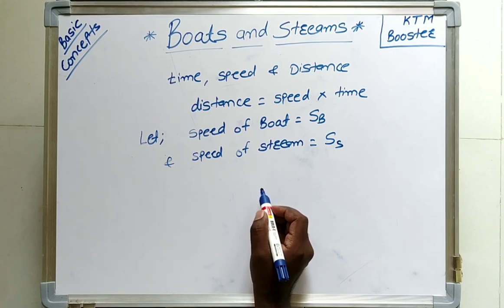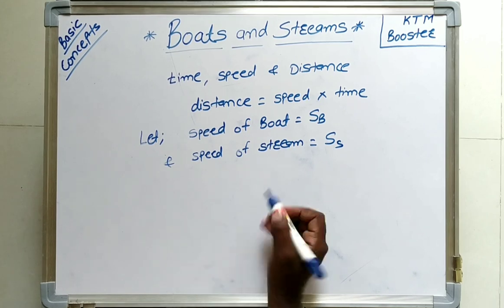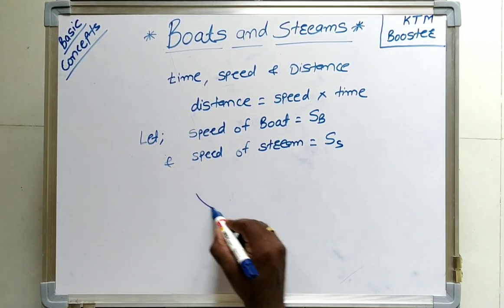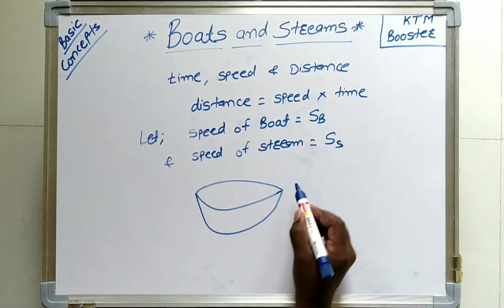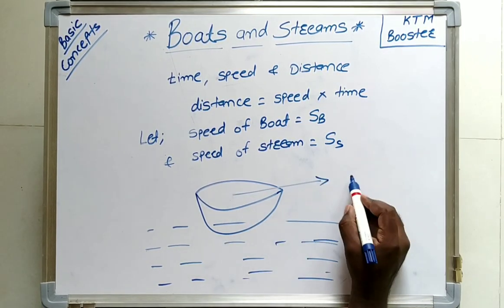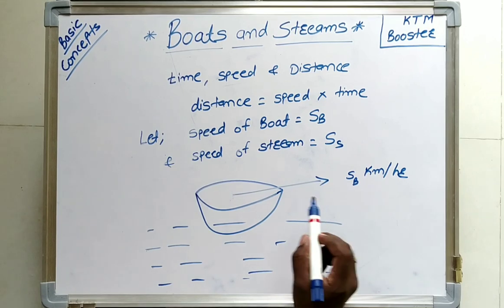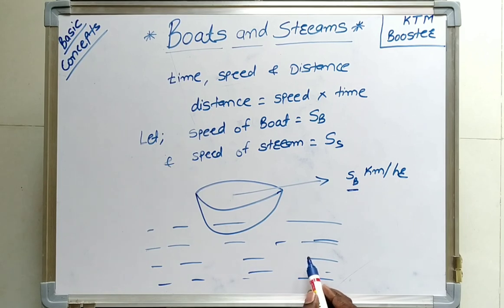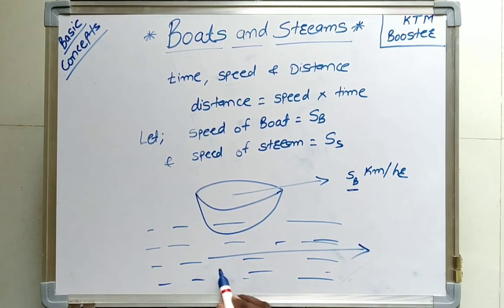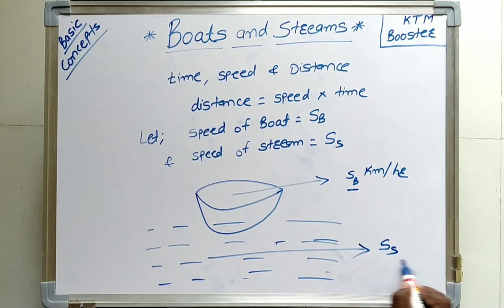The speed of movement of a boat is dependent on the speed of stream and the direction in which it is moving. If we consider that here is the boat and this is what the river represents — now it is running at S km per hour. The speed of movement of the boat is dependent on the speed of stream. If the direction of the boat is in the direction of the stream, the speed is affected accordingly.